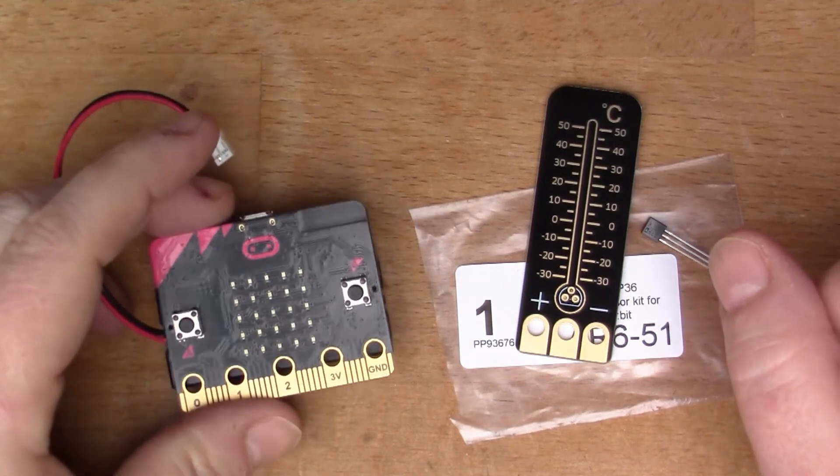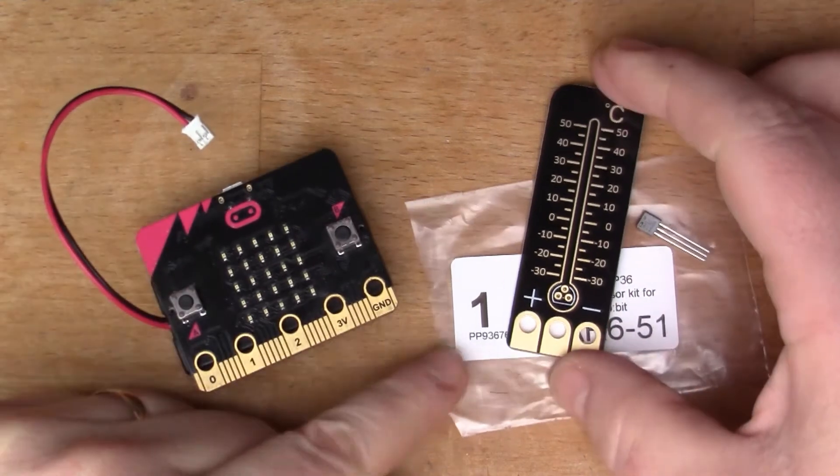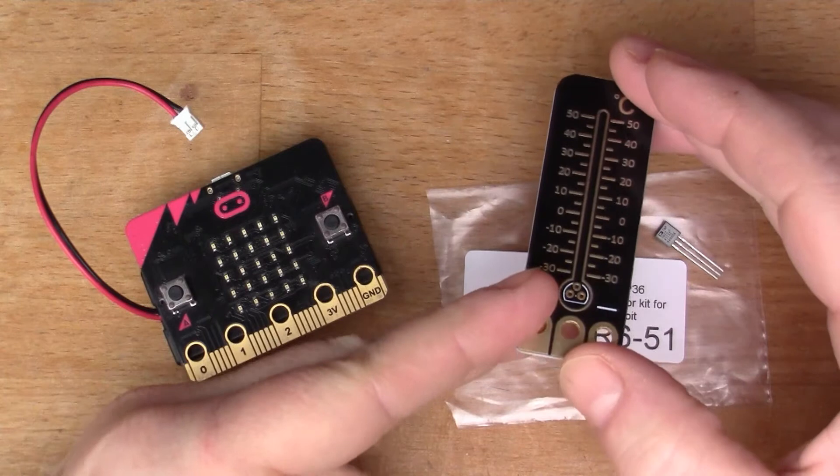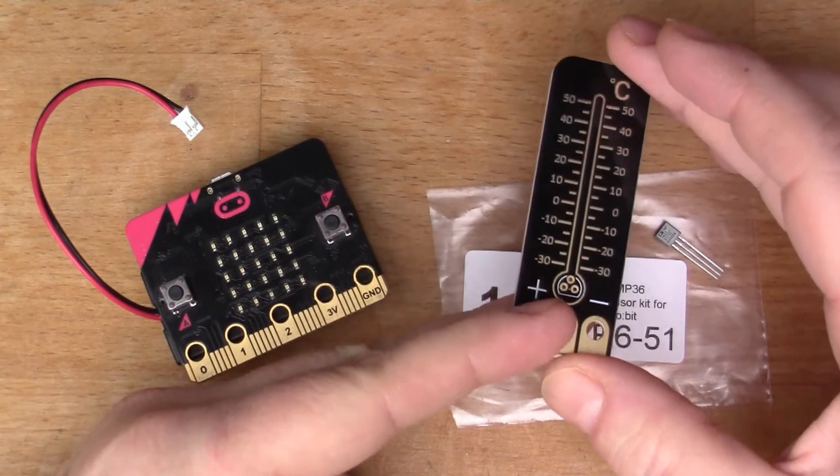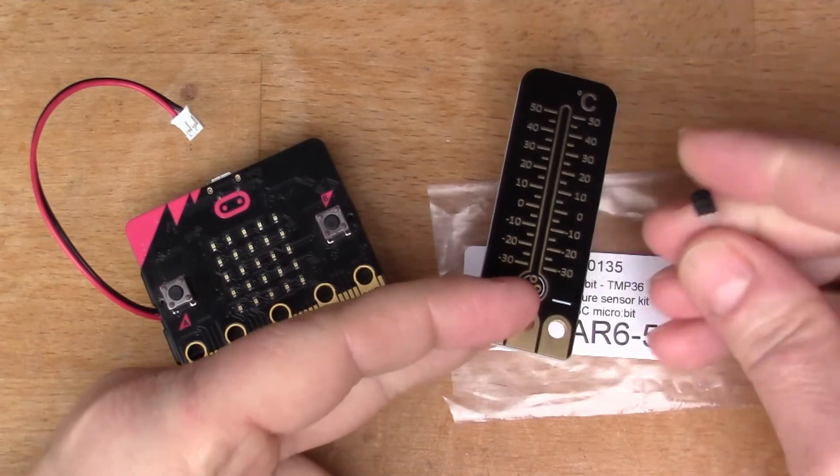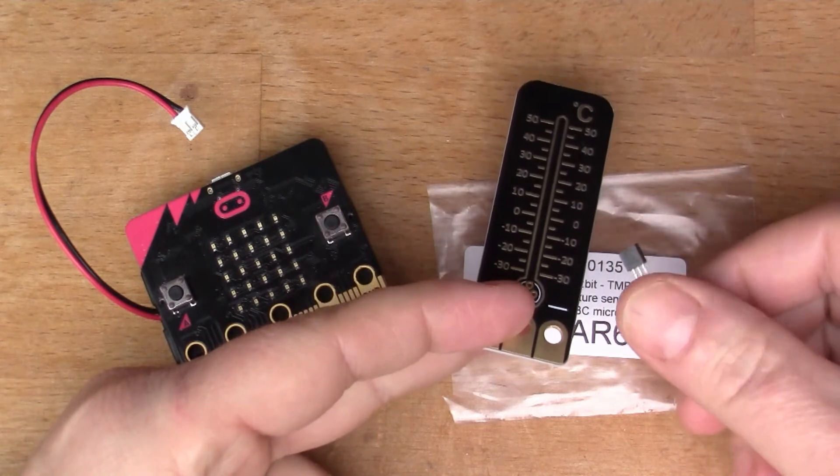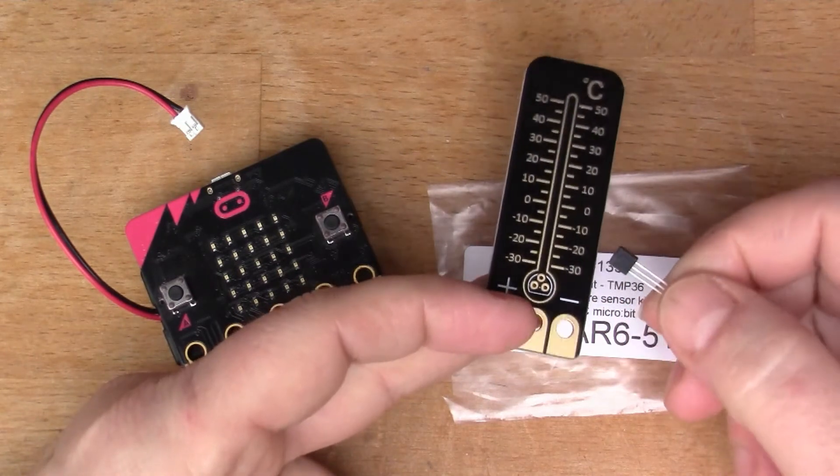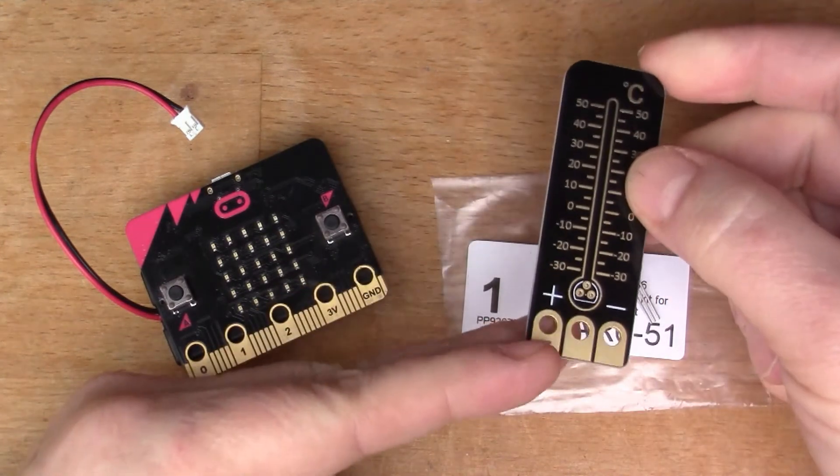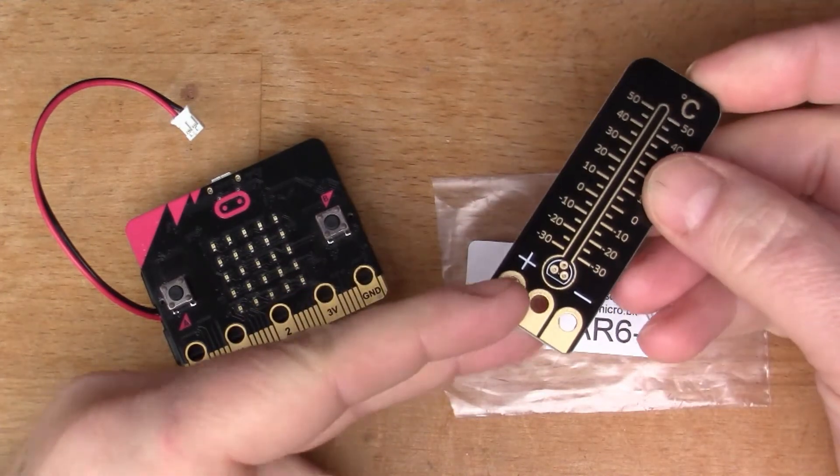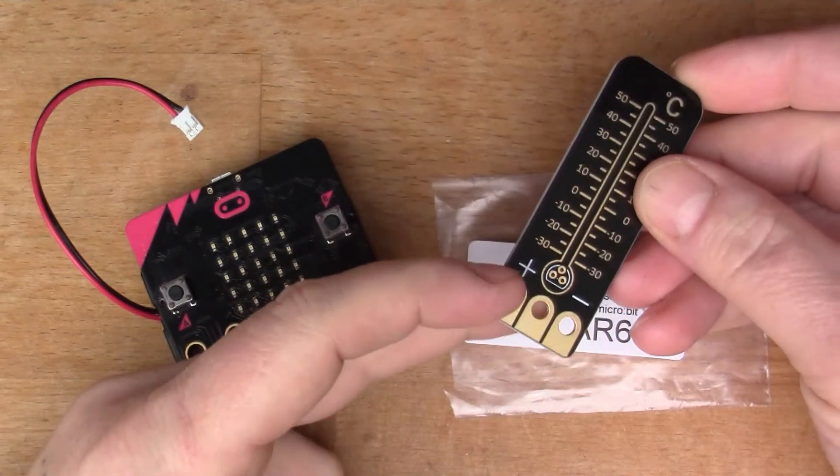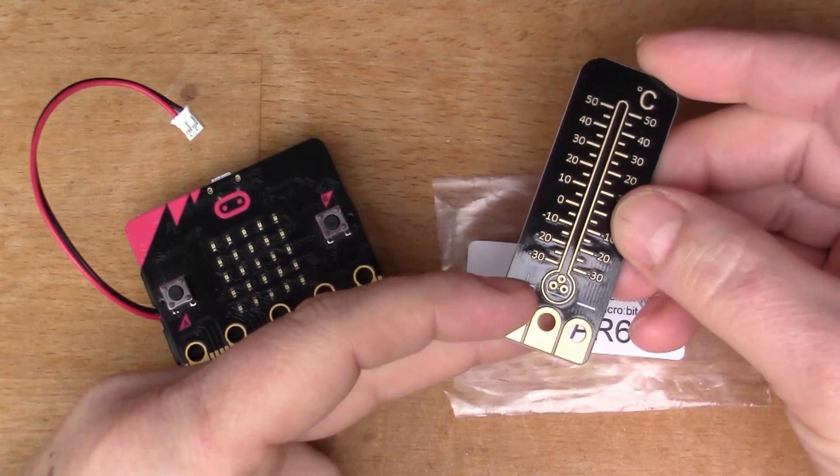Just the other day I made my first postbag video, and one of the items in the postbag was this module from Protopic. This is the TMP36 chip, a temperature chip that allows you to digitally read the temperature. Protopic made this nice circuit board for it. In a moment I'm going to solder this on and then try to use it through the software on the micro:bit.